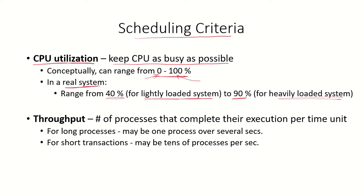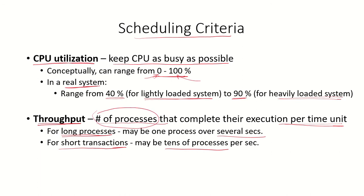Another criteria is throughput. Throughput is the number of processes that complete their execution per unit time. If we have long processes in the system, each process will require several time units, so throughput would be very low because not even one process can be completed in one time unit. If the processes are very short, we can complete maybe tens of processes in one time unit, so throughput increases.